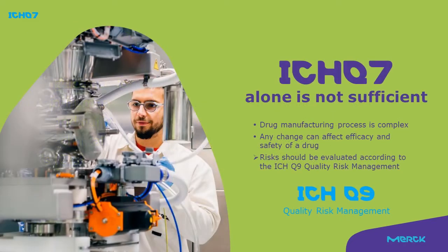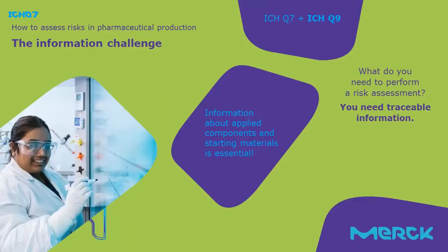As the pharmaceutical manufacturing process is complex, it may bear a lot of risks. Therefore, another guideline — the ICH Q9 Quality Risk Assessment — is an established standard on how to detect and mitigate risk of pharmaceutical production.